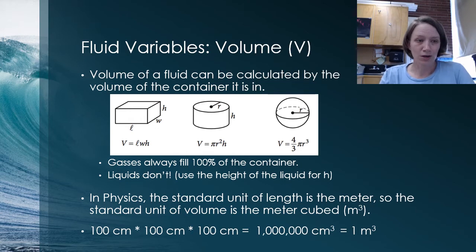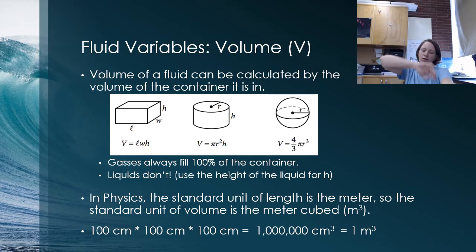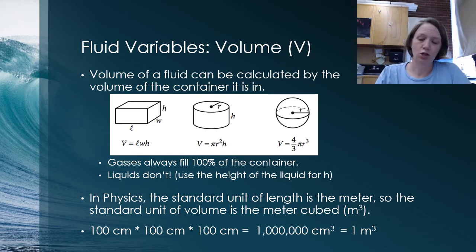A little reminder, a cubic meter is a hundred centimeters times a hundred centimeters times another hundred centimeters. So we got to do a hundred cubed centimeters cubed, which is a million cubic centimeters is equal to one cubic meter.